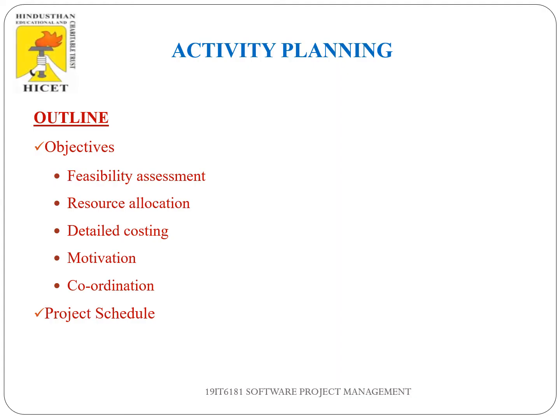As an outline, we are going to discuss the concept of Objectives of Activity Planning, then Project Schedule. Under the objectives, we are going to discuss the concept of Feasibility Assessment, Resource Allocation, Detailed Costing, Motivation, and Coordination.